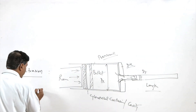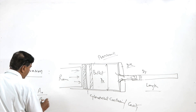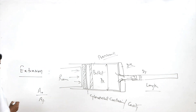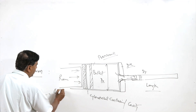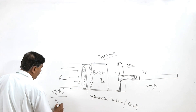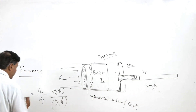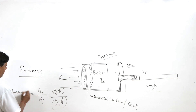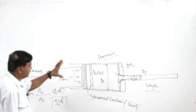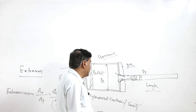We can determine the area before extrusion divided by the area after extrusion. This ratio can be determined as (π/4 × d0²) divided by (π/4 × df²). This ratio is called the extrusion ratio, and it indicates the extent of change in cross section from the billet to the extruded product.